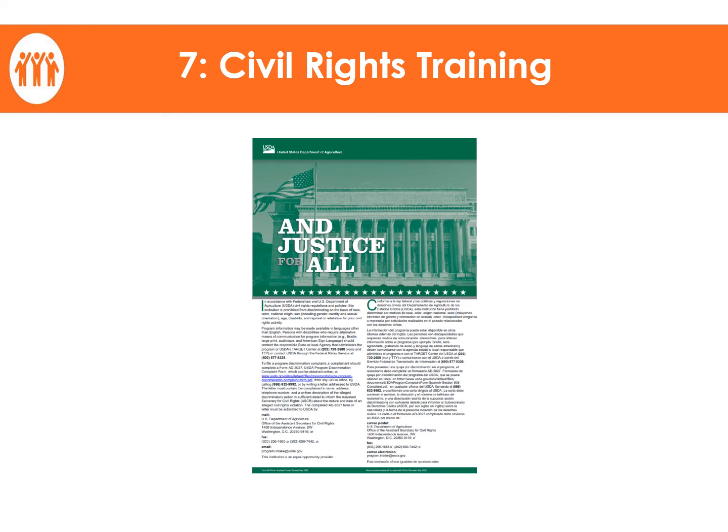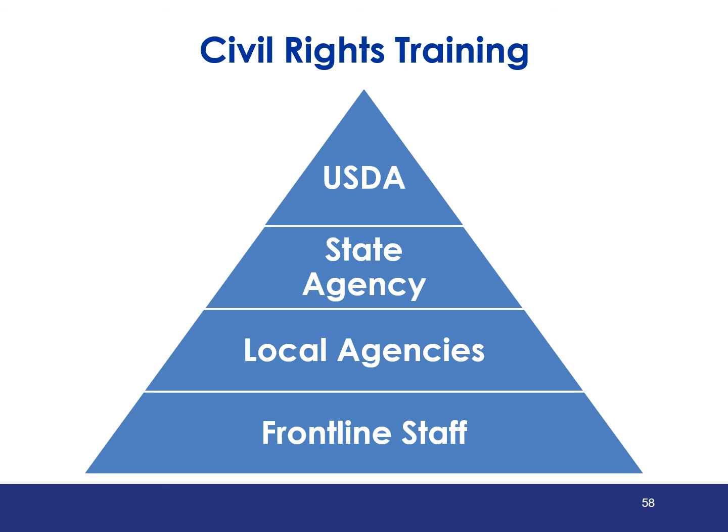Let's now review the requirements for civil rights training. Civil rights training is required so that people involved in all levels of administration of programs that receive federal financial assistance understand civil rights related laws, regulations, procedures, and directives. FNS Regional Office of Civil Rights and state agencies will be responsible for training state agency staff. State agencies are responsible for training local agencies such as SFAs, institutions, and child care providers operating child nutrition programs. Local agencies are responsible for training their subrecipients including frontline staff. Frontline staff who interact with program applicants or participants and those persons who supervise frontline staff must be provided civil rights training on an annual basis.